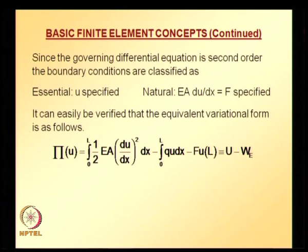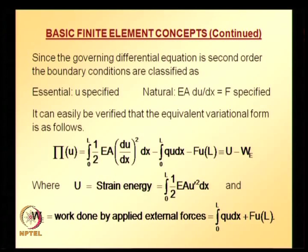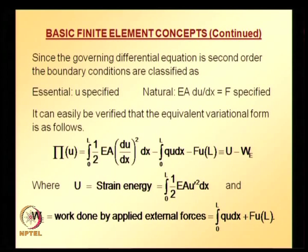Simplifying using variational identities brings it into the form: variation of some quantity equals zero. The quantity inside the bracket is the variational functional. For the axial deformation of a bar, this variational functional is the potential energy, denoted pi. If you can write the potential energy equation directly for a structural system, potential energy equals strain energy minus work done by applied forces.